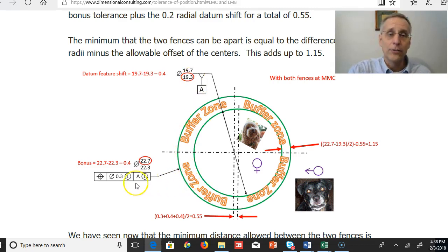Now our callout says that we can have a bonus tolerance, and this says we can have datum feature shift. Our bonus tolerance, we always calculate from the size tolerance of the considered feature. And so that's going to be the MMC size minus the LMC size or 0.4. The datum feature shift, we're going to calculate from the size of the datum feature. In this case, it's going to be the LMC size minus the MMC size, 19.7 minus 19.3, which is again equal to 0.4.